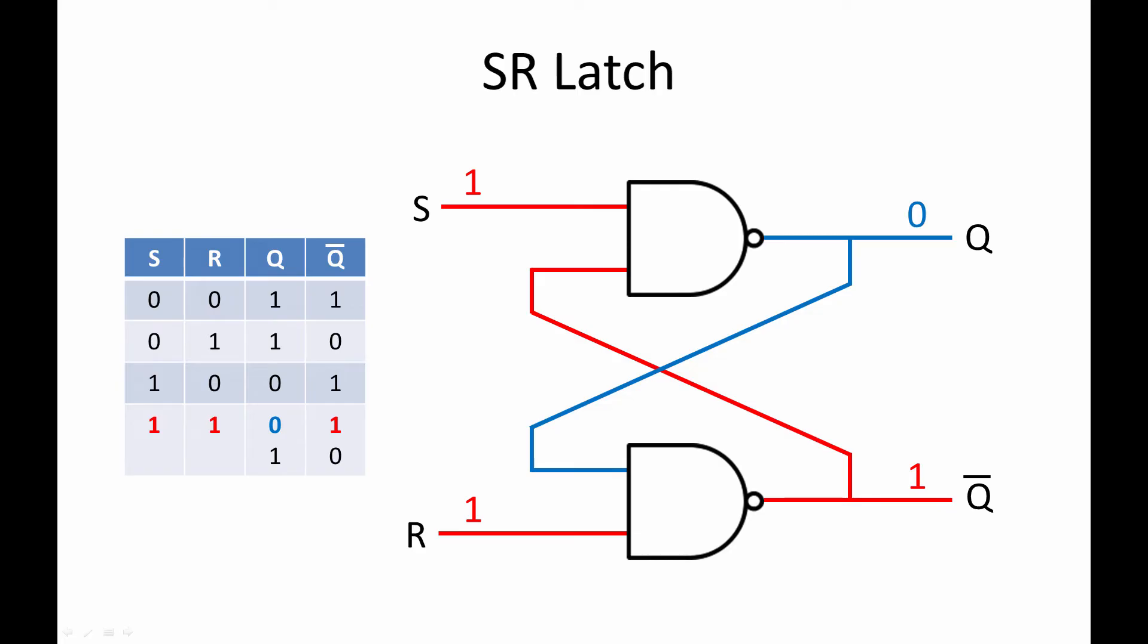Here's an SR latch built from NAND gates. This version of an SR latch is active low. S and R should be kept high most of the time, and a drop in voltage at S, that is a low pulse at S, will set it. A low pulse at R will reset it. At the moment, the output at Q of this latch is 0, so the latch is currently storing a 0. When S becomes 0 momentarily, the output at Q becomes 1. When S returns to its normal high state, Q is still 1. The latch is now storing a 1.